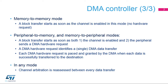A DMA hardware request identifies a single DMA data transfer. Each DMA hardware request is paced and granted by the DMA when each data is successfully transferred to the destination. In any mode, channel arbitration is reassessed between every data transfer.